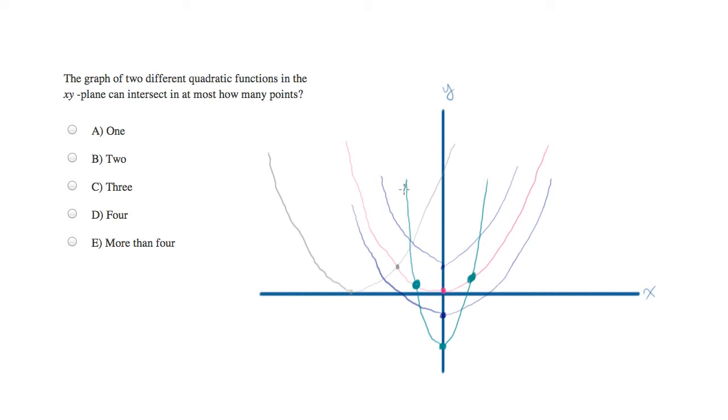Now, since the green is steep and the pink is shallow, there will not be any further intersecting. The pink will continue to go out wide. The green will go up steep. So we've hit our maximum of two points of intersection, and the correct answer is B.